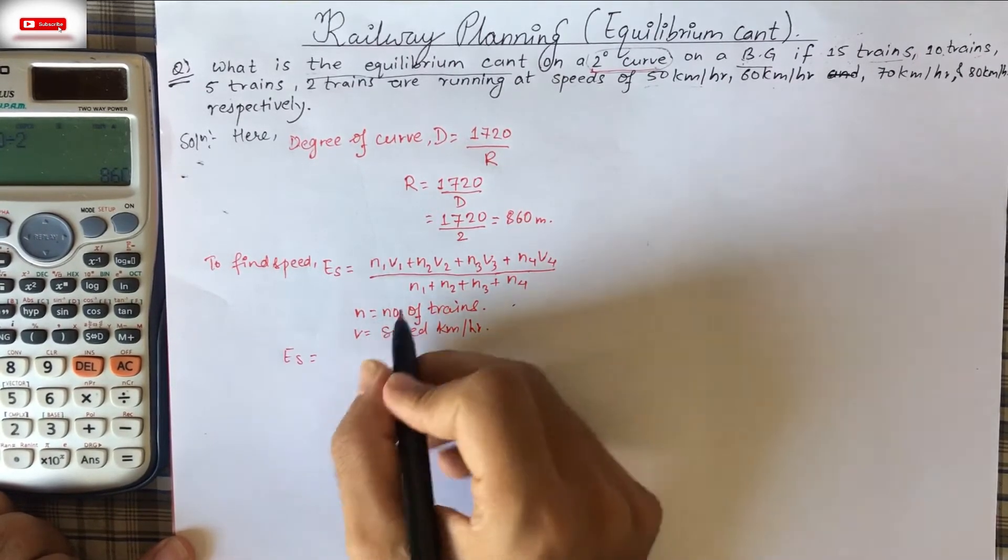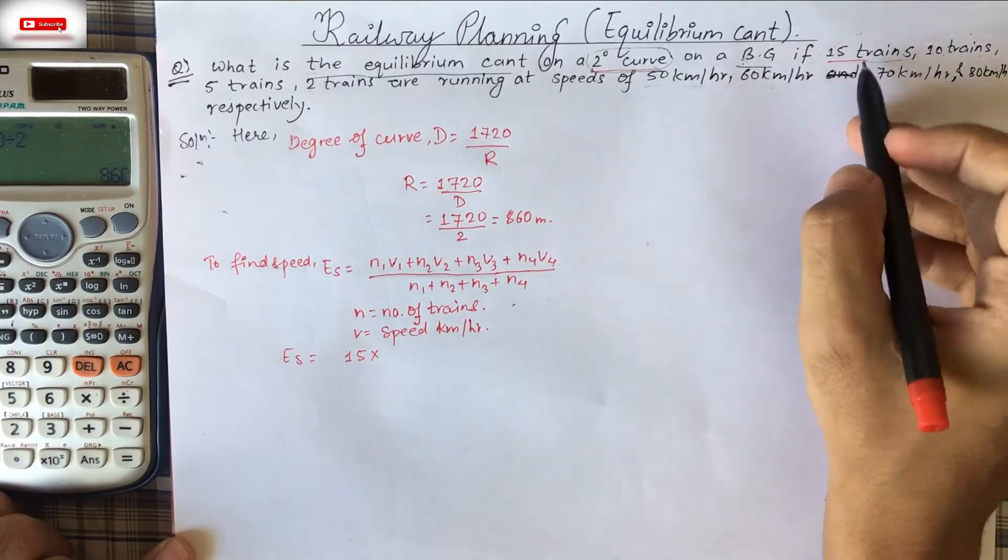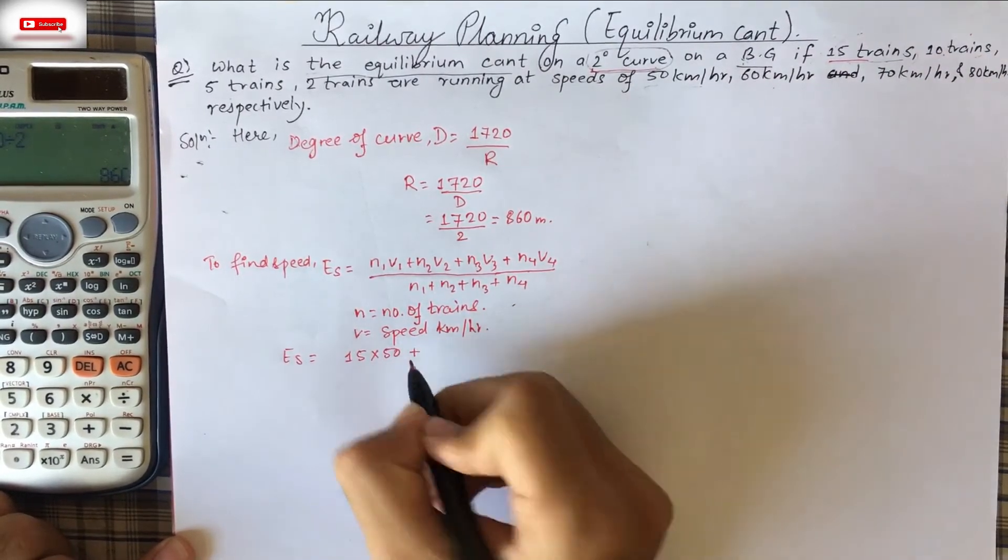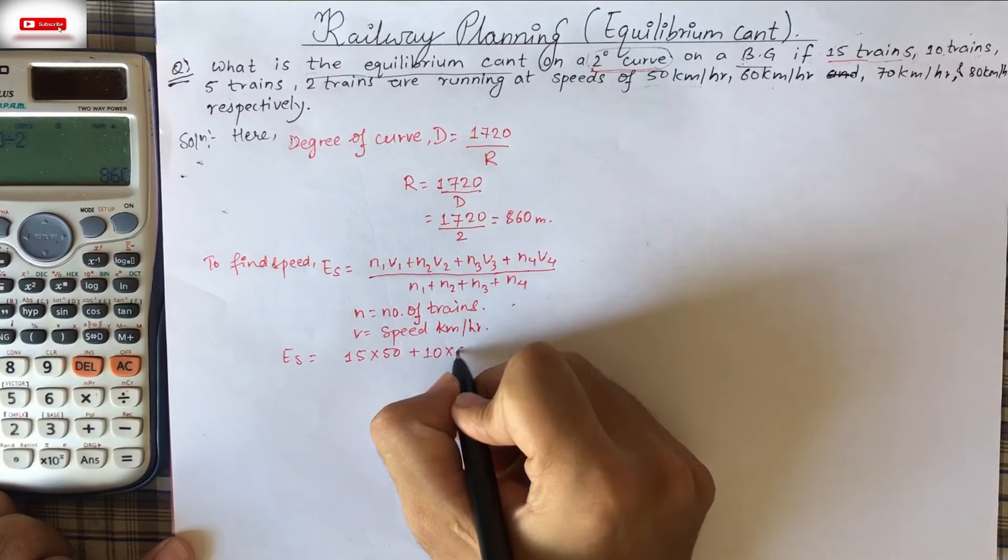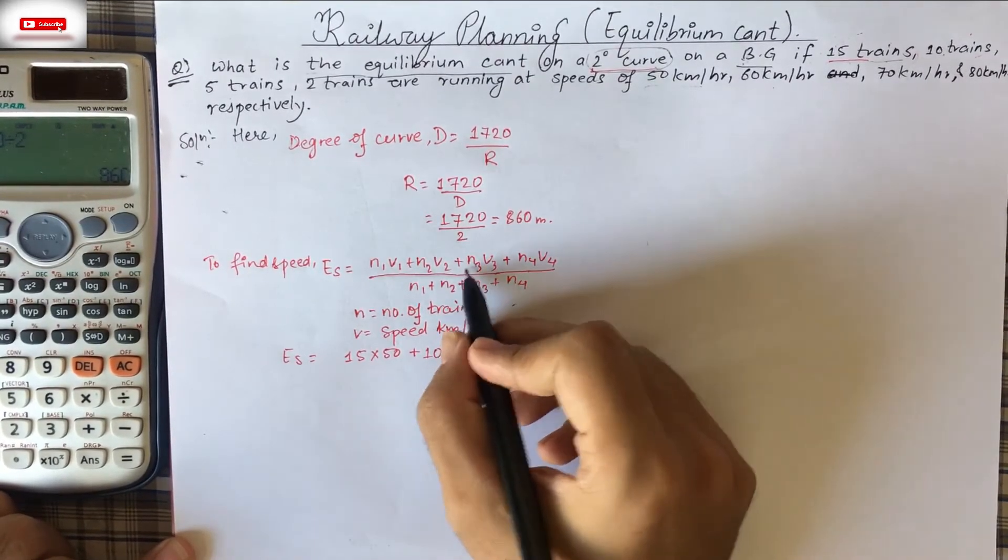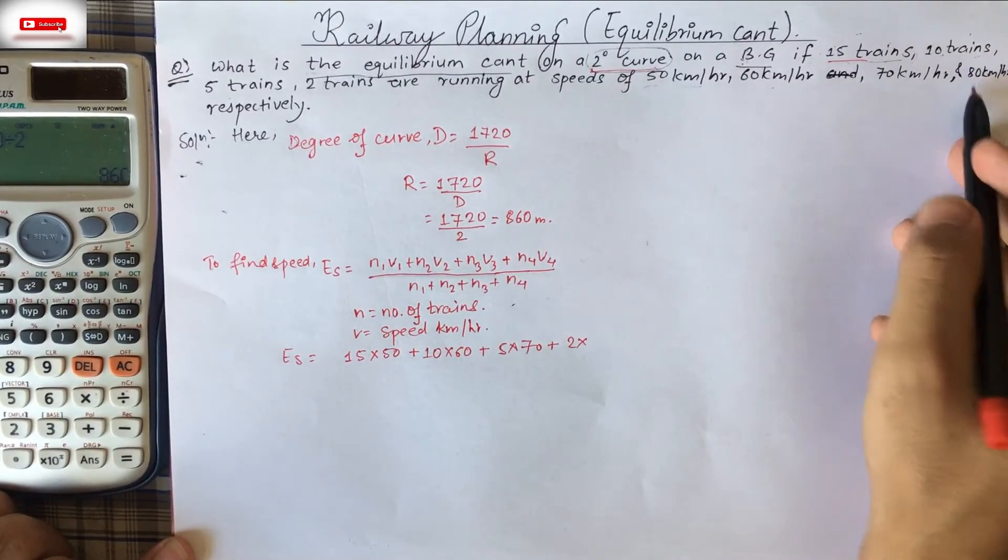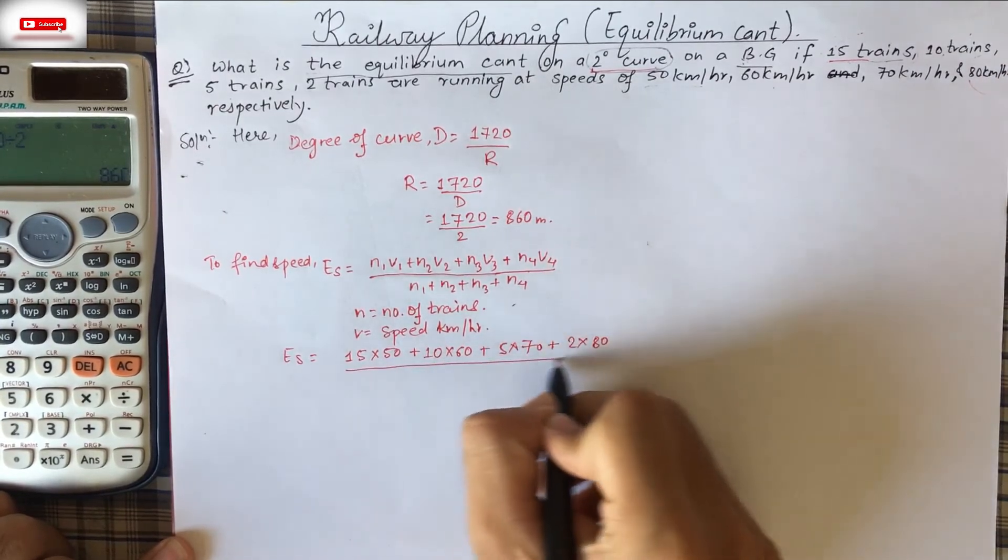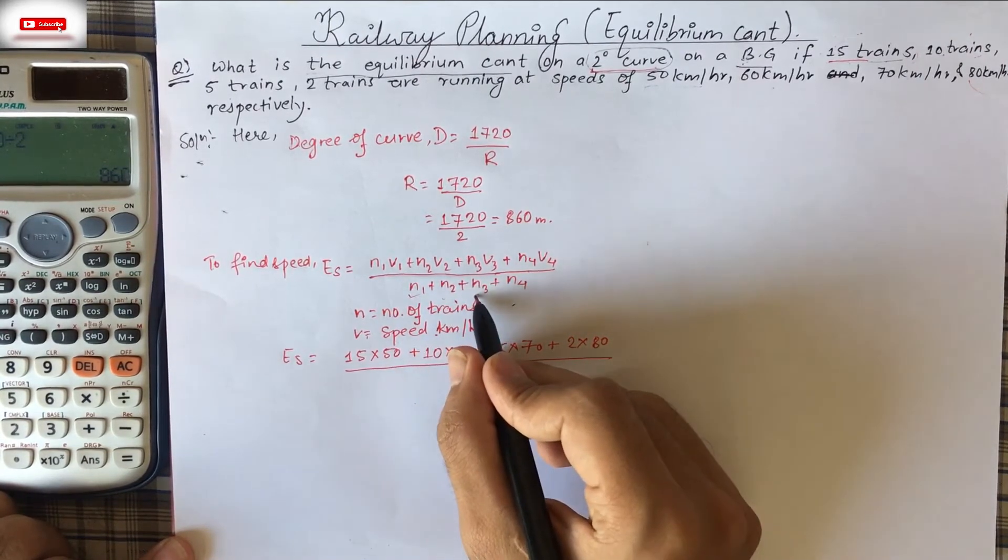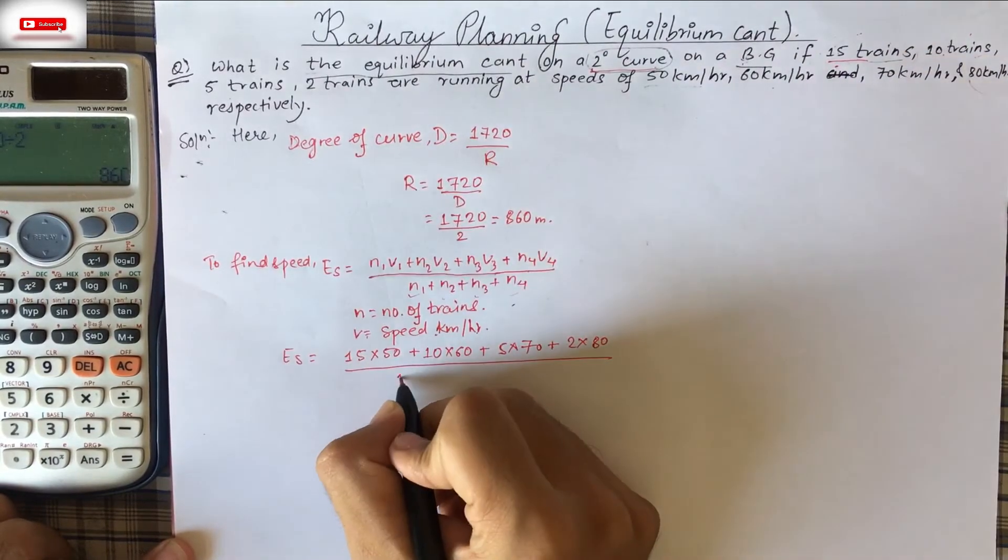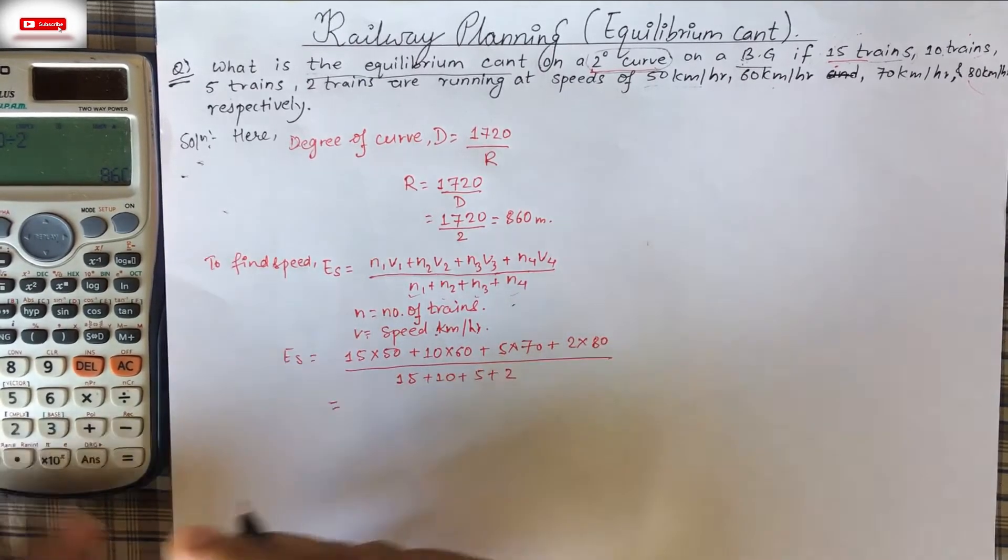Now, ES is equal to N1 number of trains. In first, 15 trains. So 15 into, for 15 trains, what is the speed? 50. So into 50 plus, similarly for 10 trains into each number of trains. That's why 10 into 60. Plus 5 trains, 5 into 70. Plus 2 into 80 kilometer, 80. And V is the speed kilometer per hour, N is the number of trains. So N1, N2, N3, N4 are given. So we'll write 15 plus 10 plus 5 plus 2, 15 plus 10 plus 5 plus 2.